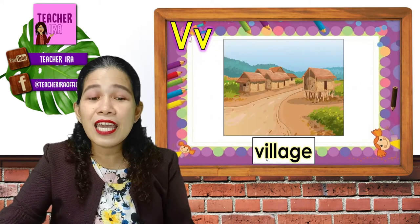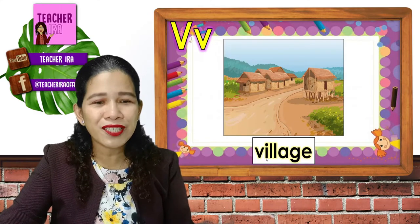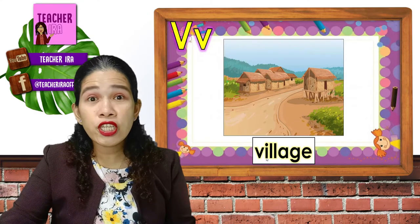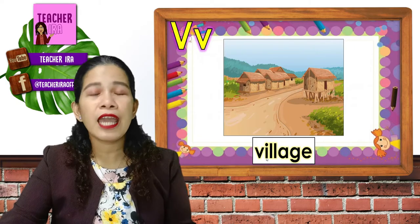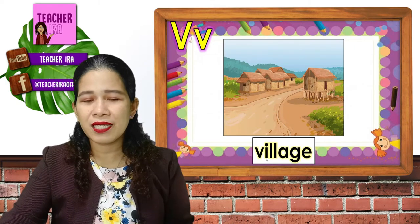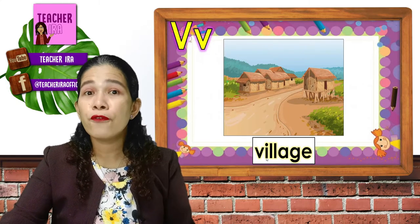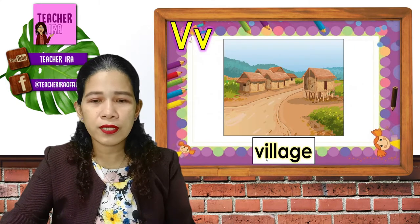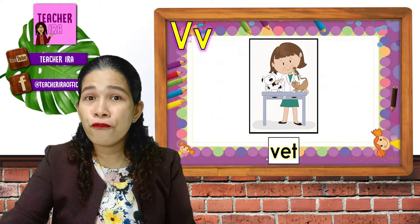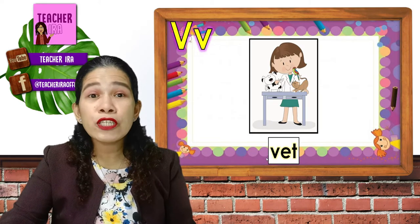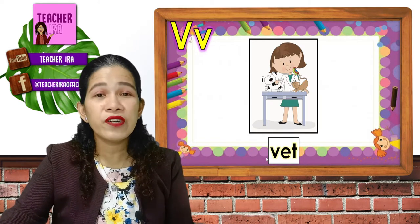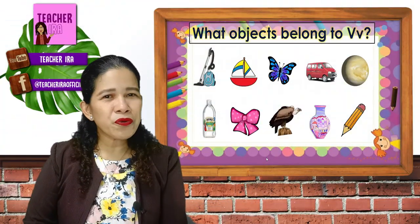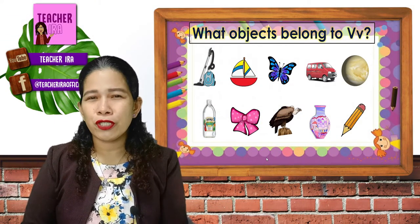Next is village. You say village. Village is a community made up of people and families. That's V, village. V, vet. Vet is a doctor for animals. That's V, vet. Kids, those are words with V beginning sound. They all have V in the beginning.